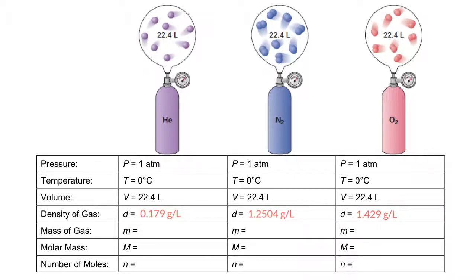Using the density, the mass per liter, and the volume, let's figure out what is the mass of each of these gases in the container. If we want mass, we're going to multiply the density by the volume. So I've got about 4 grams of helium, 28 grams of nitrogen, and 32 grams of oxygen in these containers.